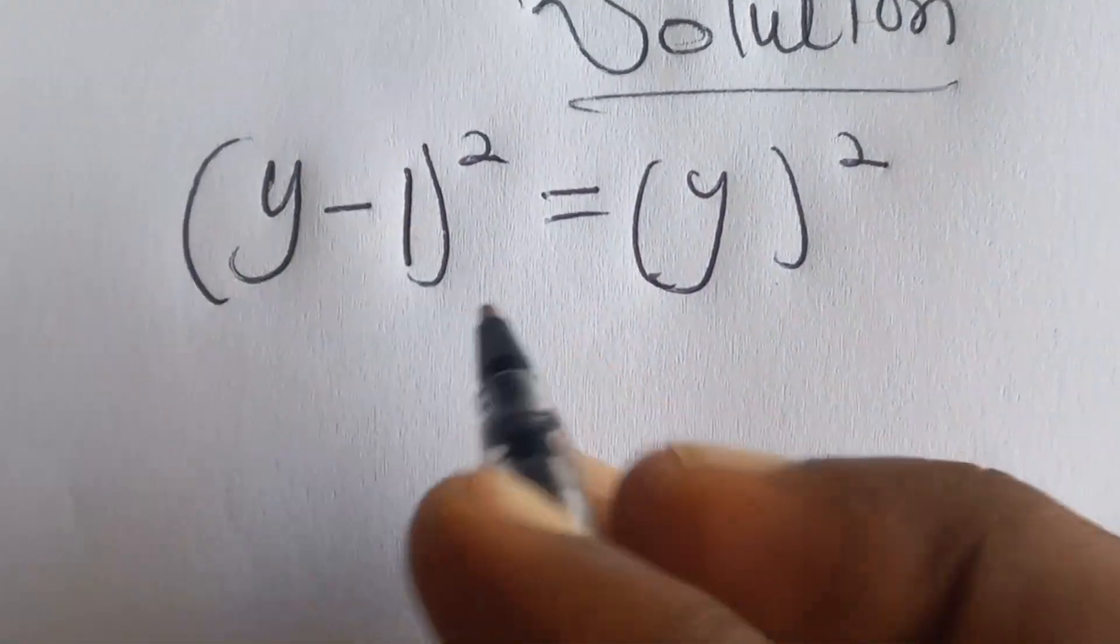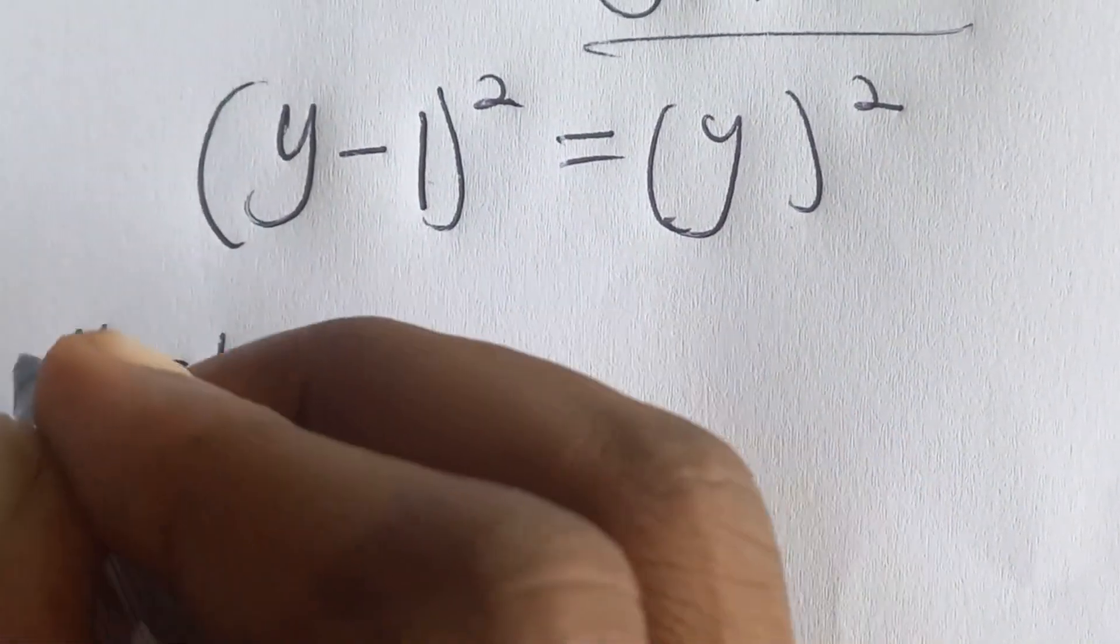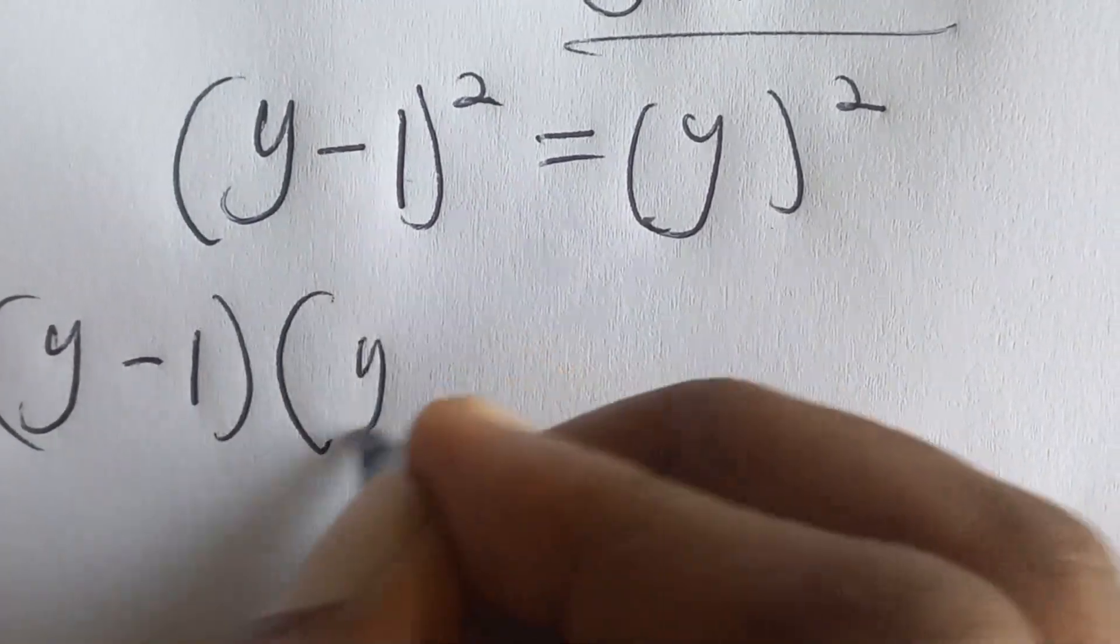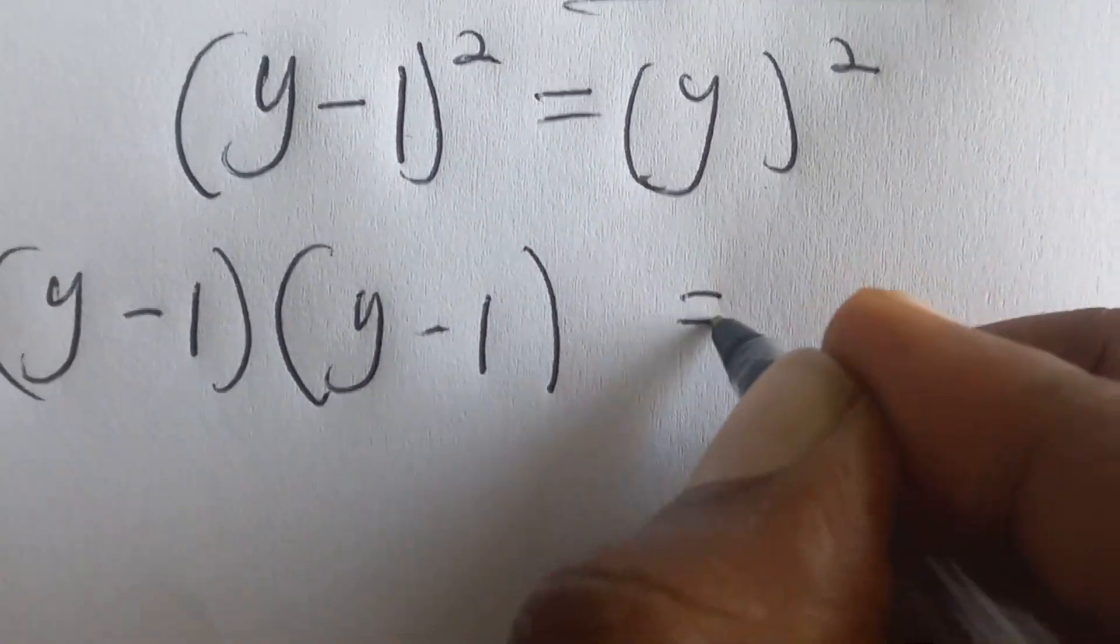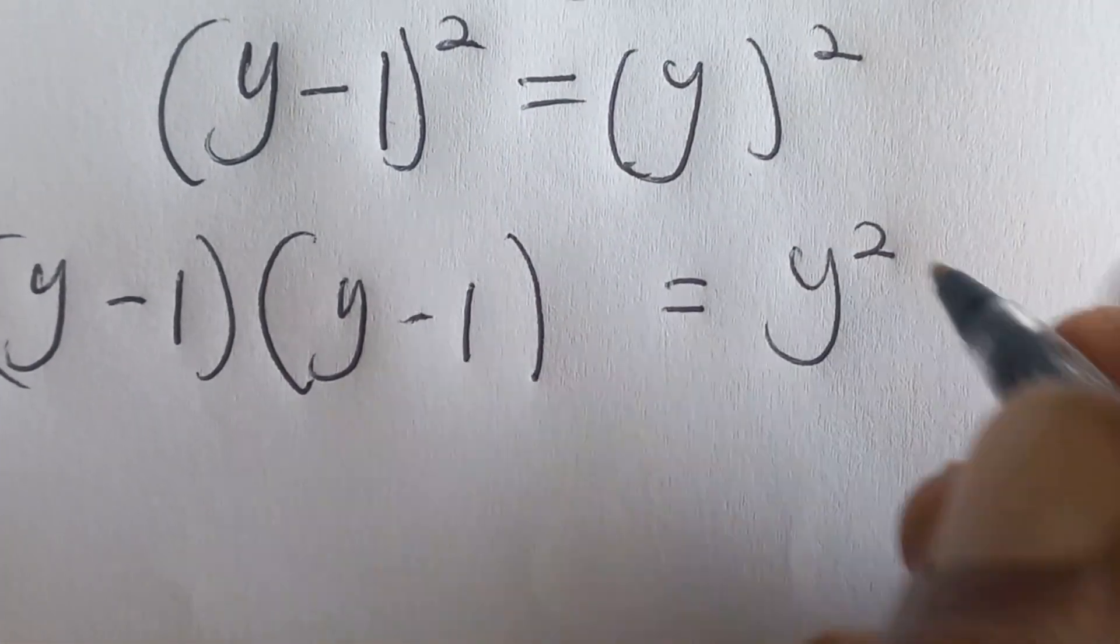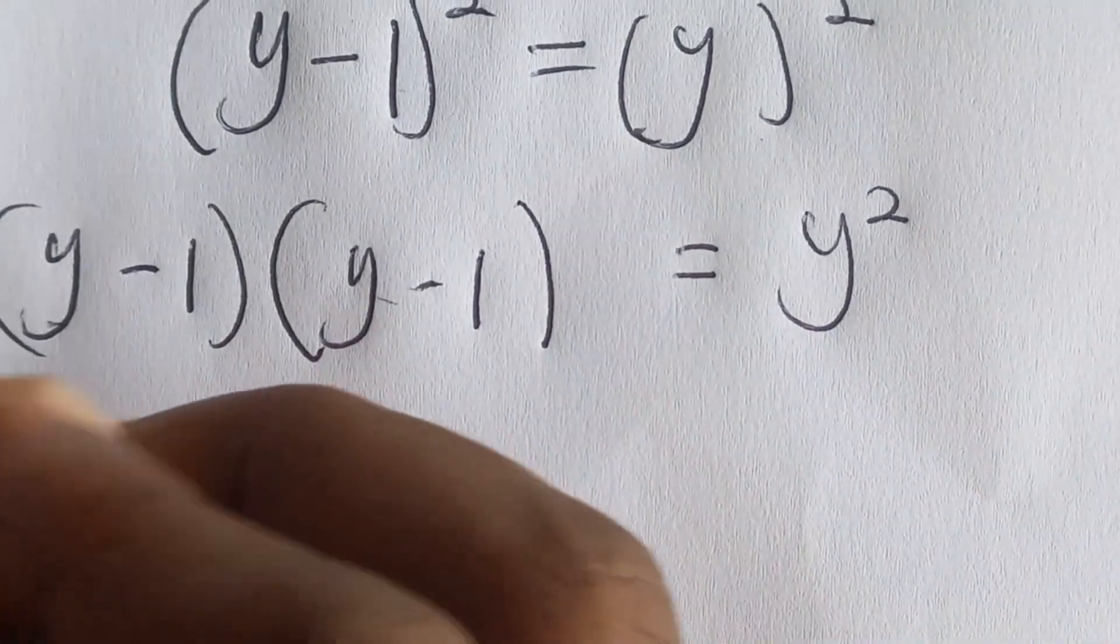So to expand this, we have (y minus one)(y minus one), which is equal to y squared. So y times y is y squared.